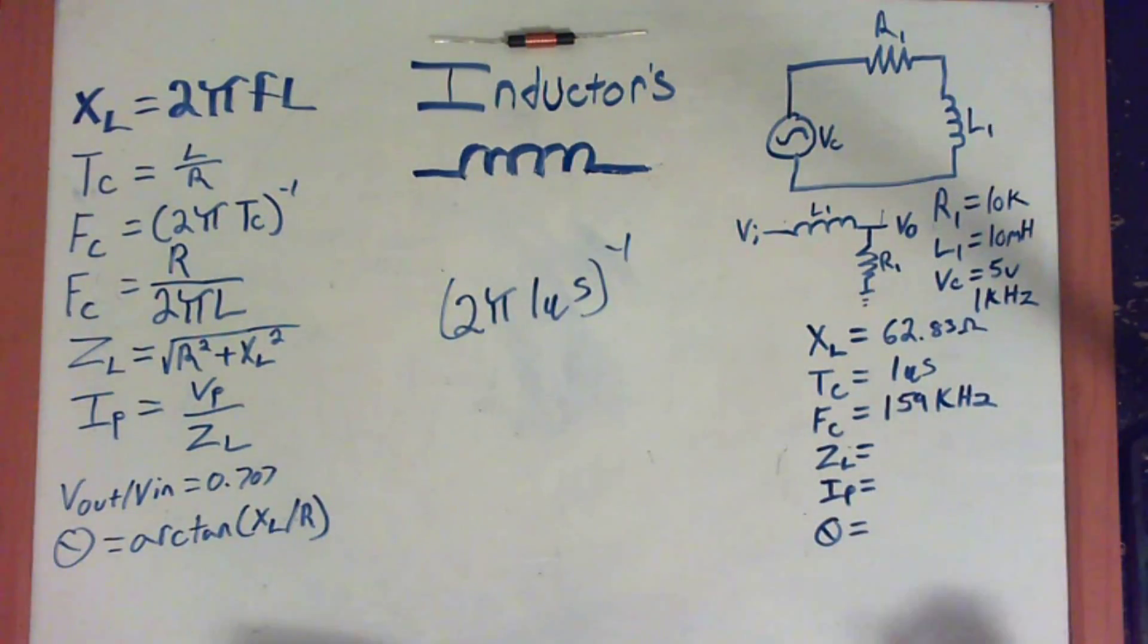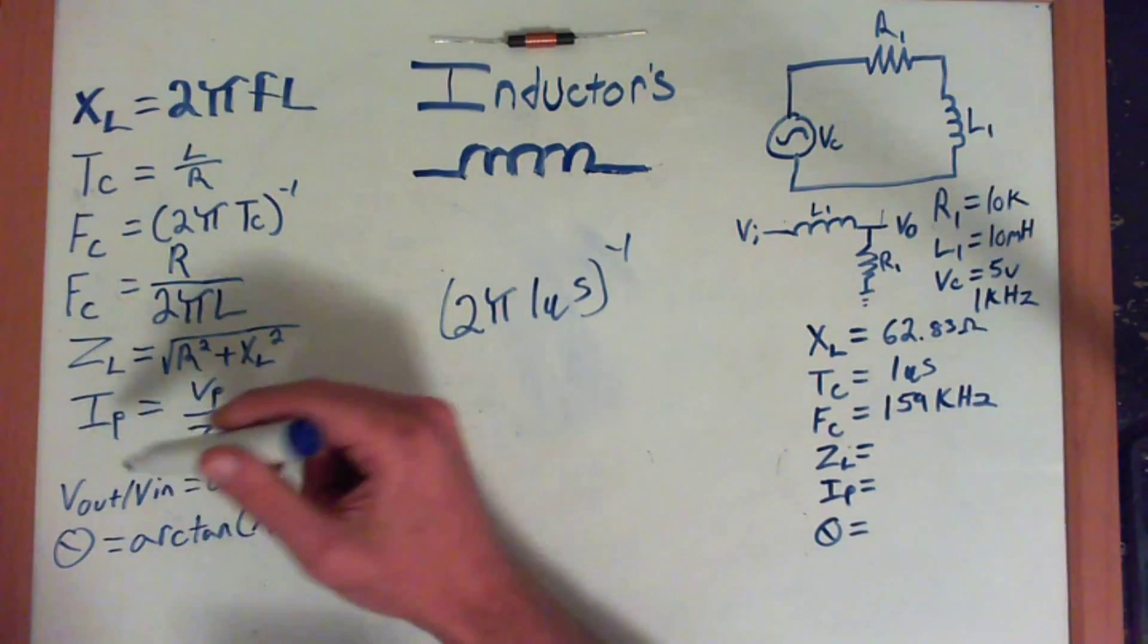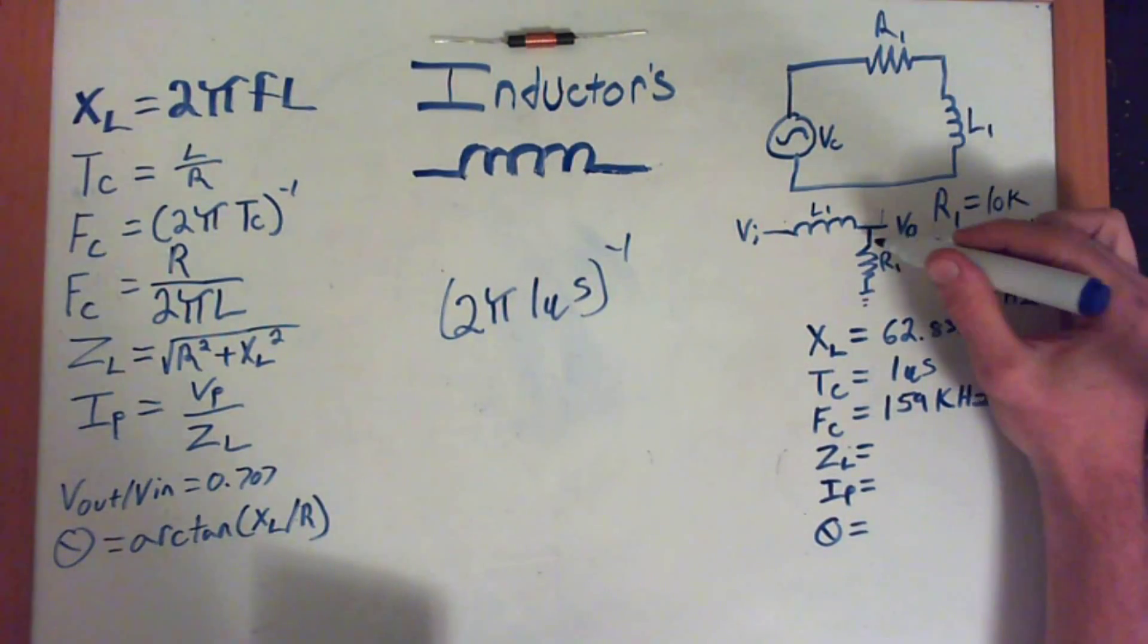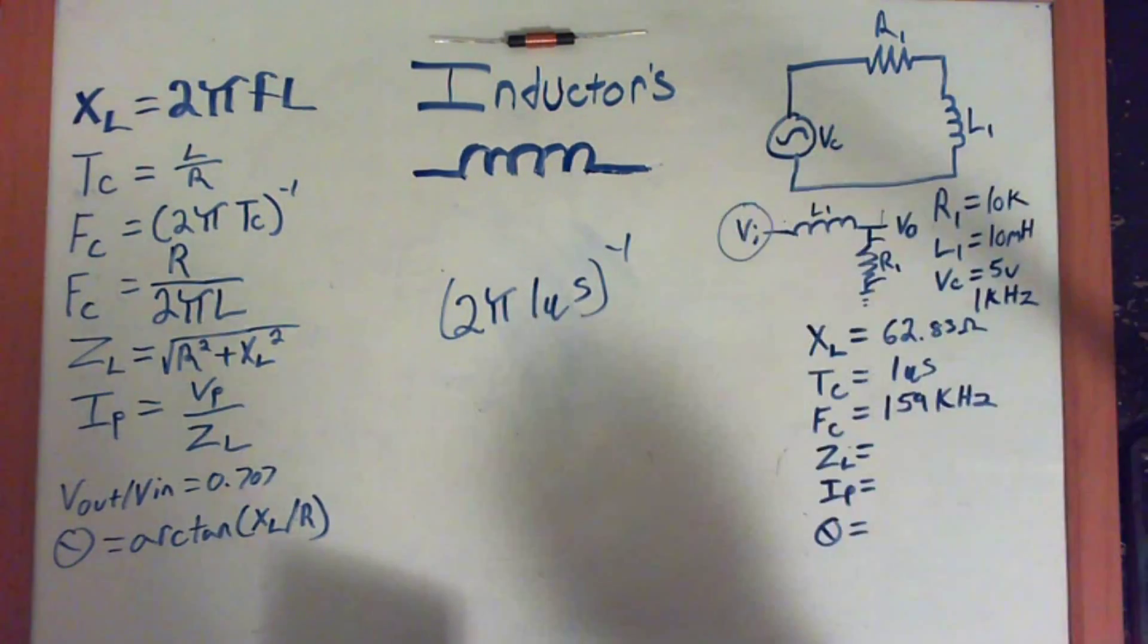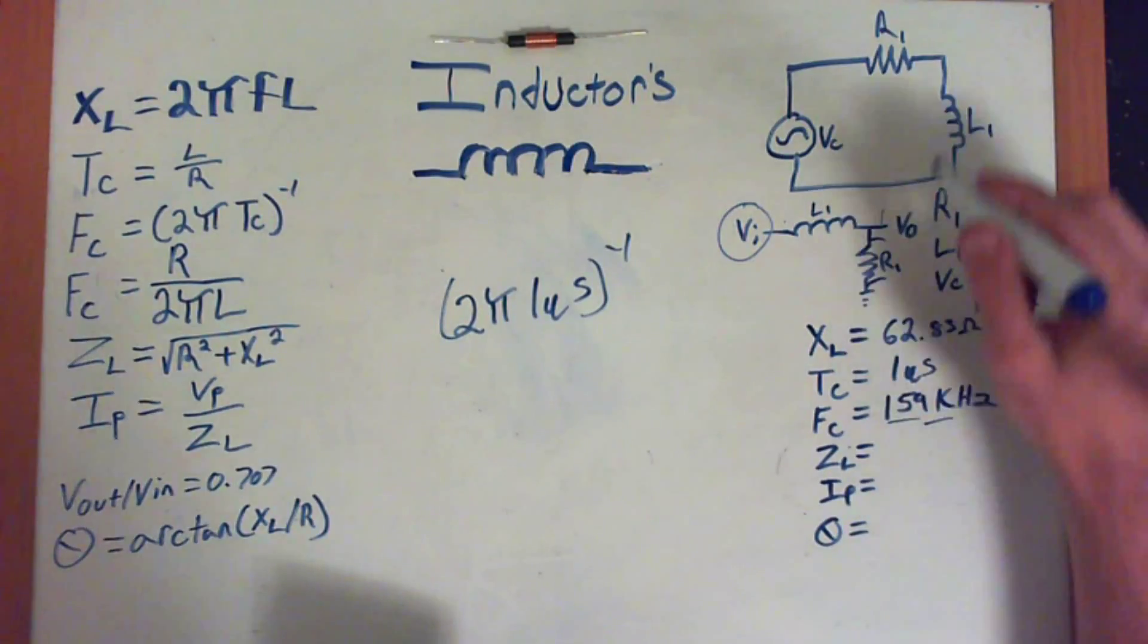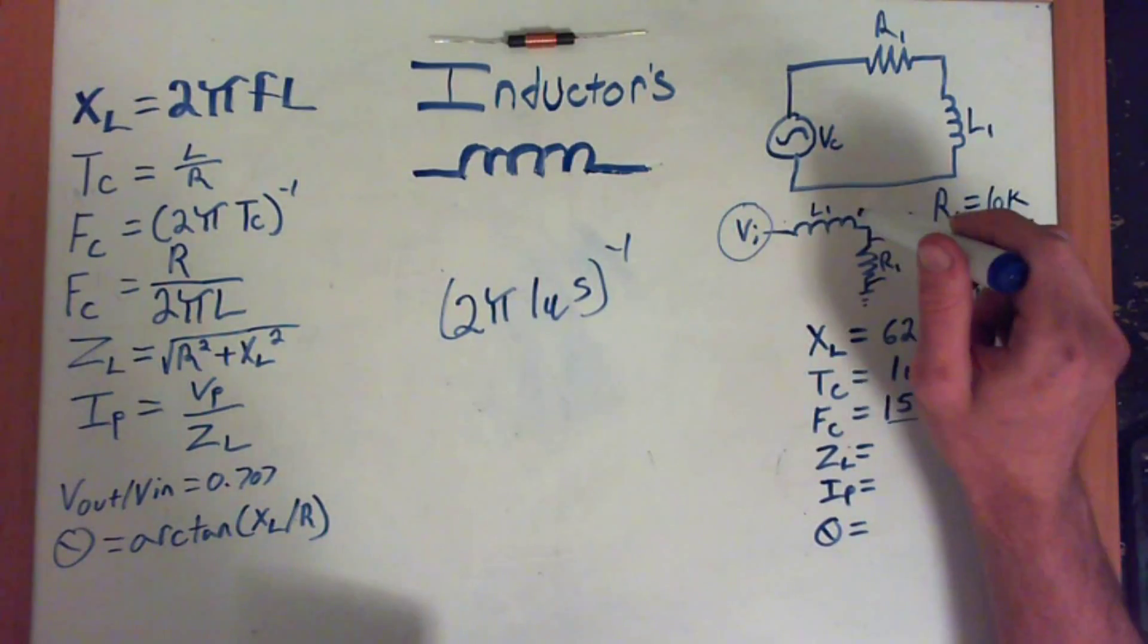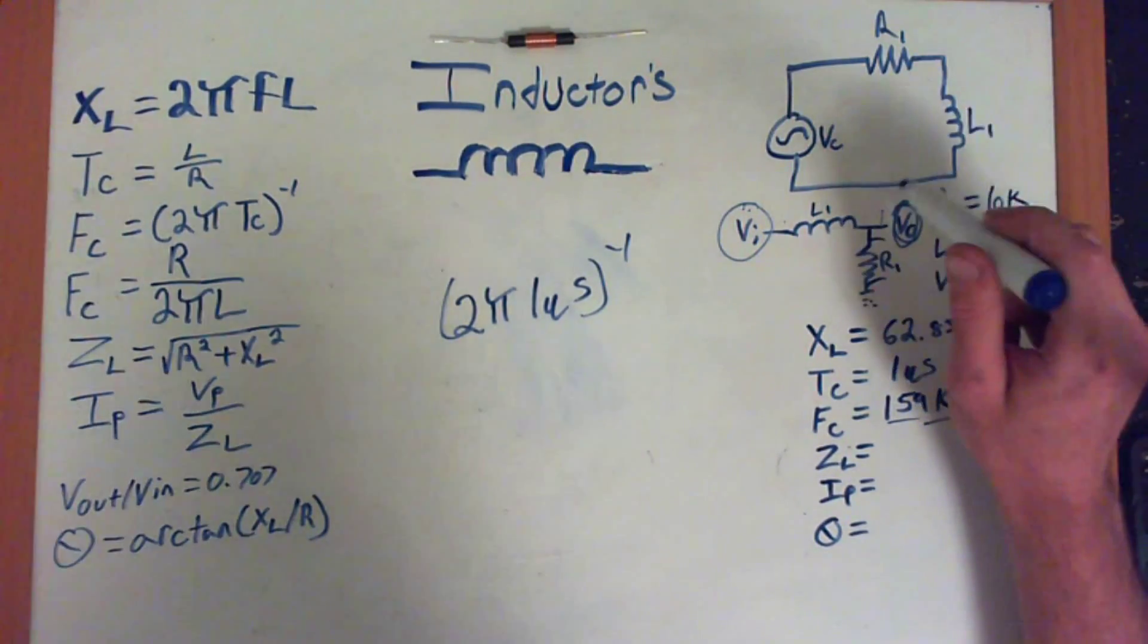So to explain frequency cutoff, at 159,000 Hz, the Vout divided by the Vin is going to equal 0.707. And to simplify that even more, the voltage across this resistor is going to be 70.7% of the Vin. So which means at this frequency, this resistor is going to start sending 70% of the voltage from the Vin to ground. Which means that Vout, you're going to be getting very little voltage out.